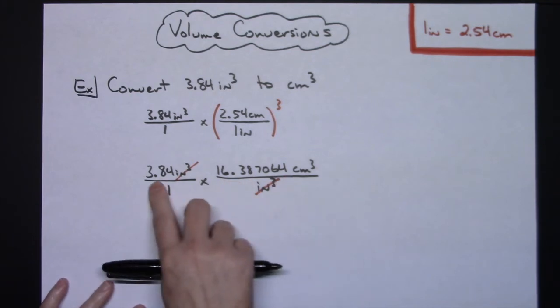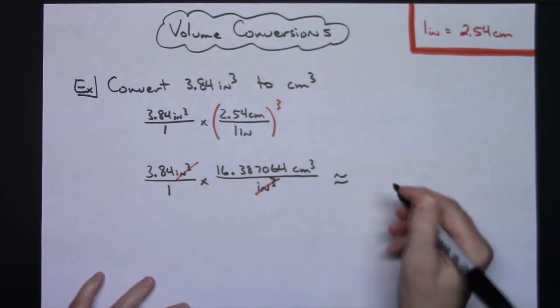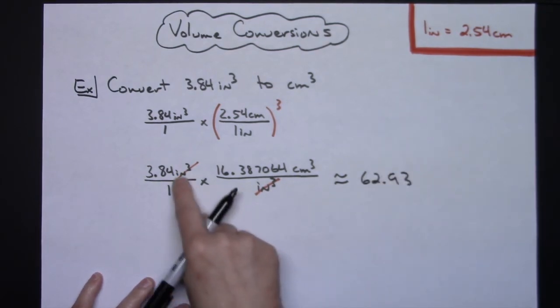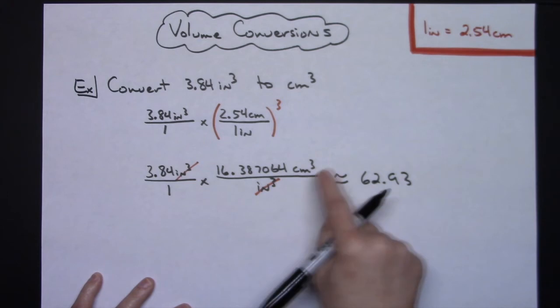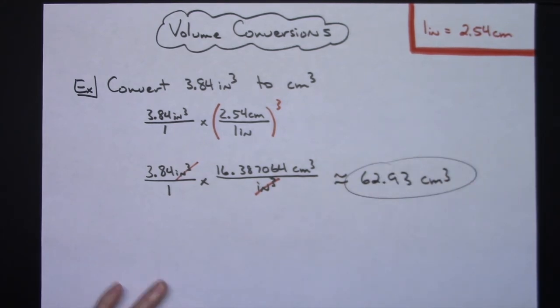So putting this in your calculator and then rounding, to multiply that out you get approximately 62.93. The only label left in the entire problem is that cubic centimeters, so then now I've converted that to cubic centimeters.